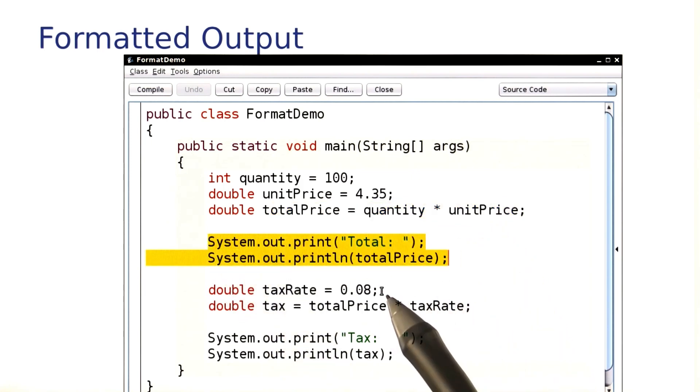So I'll print it. There's also 8% tax, so here I'm figuring out the tax, and then I'm printing that.